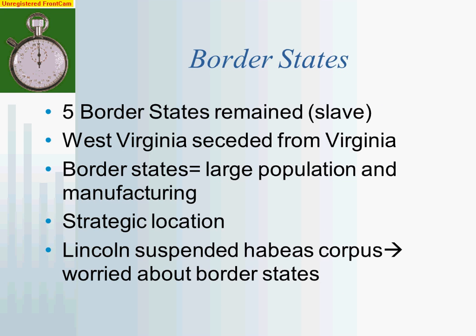Now let's talk about the border states — crazy important. There are five slave states that remained with the Union: Missouri, Kentucky, Delaware, Maryland, and the newly created state of West Virginia. In mid-1861, the western counties of Virginia decided to secede from Virginia. These are those mountain whites in the mountains of Appalachia who were not keen about fighting a war to protect slavery when they didn't care about slavery anyway. So we see the creation of West Virginia, which stayed tied to the Union.